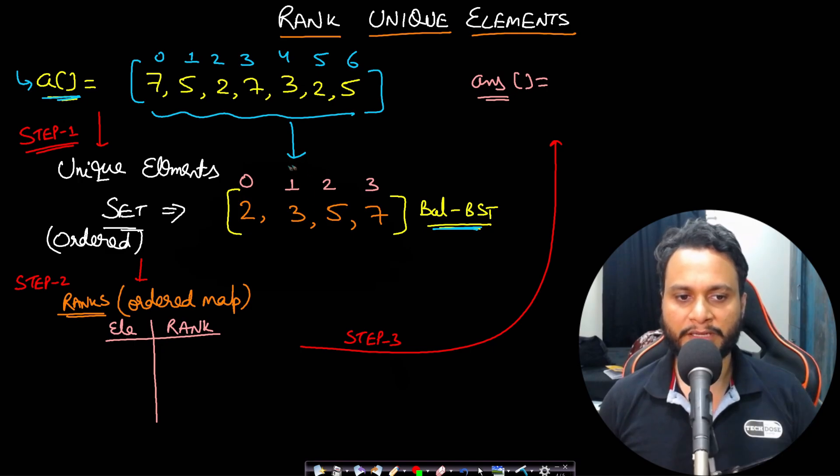Now, we know that we can assign two with rank one, three with rank two, five with rank three and seven with rank four. But then we cannot do a direct lookup of the items on this set and get the exact place where it is present.